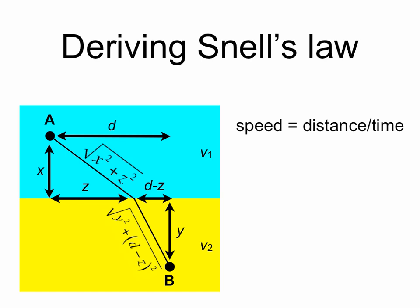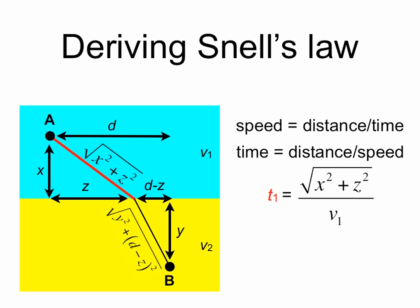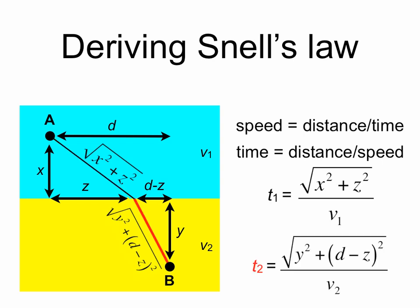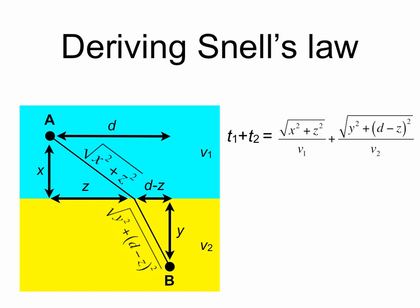Recall that speed equals distance over time, so time equals distance over speed. The time T1 for light to travel through the blue region is the square root of x squared plus z squared, divided by v1. Similarly, T2, the time through the yellow region, is the square root of y squared plus (d minus z) squared, divided by v2. The total time from A to B is T1 plus T2. We want to find z that minimizes this total time — that is, we take the derivative of the total time with respect to z and set it equal to zero.